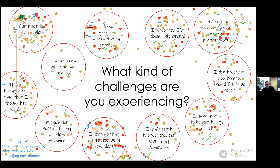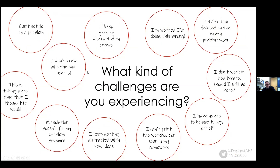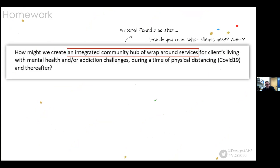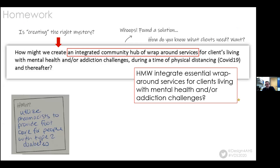Now we're going to look at some homework feedback. This How Might We at first looks really good — it's specific and talks about who might be involved — but then we noticed there's a solution embedded in it: 'an integrated community hub of wraparound services' is a solution. So we rephrased it as 'How might we integrate essential wraparound services,' which shifts the How Might We into a different realm of possibility.